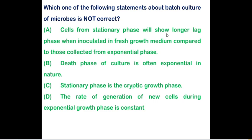Option B — death phase of culture is often exponential in nature — is correct, as there is an exponential decrease in living bacterial cells. Option C — stationary phase is a cryptic growth phase — is incorrect; cryptic growth occurs in the death phase, where there is hidden growth of some microorganisms. Option D is correct: the rate of generation of new cells during the exponential growth phase is constant. Since the question asks which is not correct, the answer is option C.